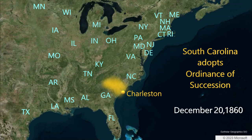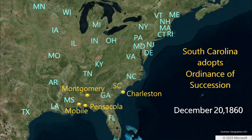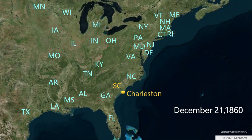That day, large 100-gun salutes in support of South Carolina's secession are sounded in Mobile, Alabama, Pensacola, Florida, and Montgomery, Alabama. The next day, December 21st, an enthusiastic secession meeting occurs in Mobile, Alabama. By now, Charleston, South Carolina — one of the largest cities in the South, and now a self-declared foreign city — is the center of the nation's attention.